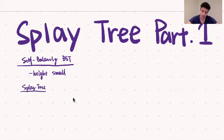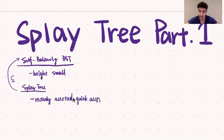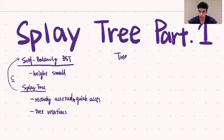A splay tree is a self-balancing binary search tree with the additional property that recently accessed elements are quick to access again. The splay tree maintains this property by using tree rotations on any of its operations. A tree rotation is an operation on a binary tree that changes the structure of the tree without interfering with any of the order of the elements.